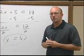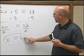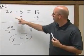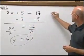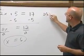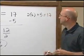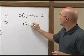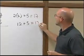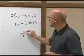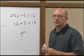If we want to check to make sure our answer is correct, we replace x in our original equation with 6. So does 2 times 6 plus 5 equal 17? 12 plus 5 does equal 17. Yes, our answer is correct.